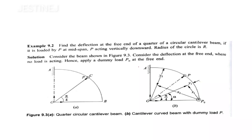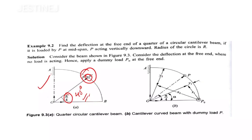The radius of the circle is capital R. You can observe the beam in the figure, and a point load is acting at the midspan — between A and B — at an angle of π/4, that is 45 degrees. An open circle indicates the load acting downwards. Our aim is to calculate the deflection at point B.